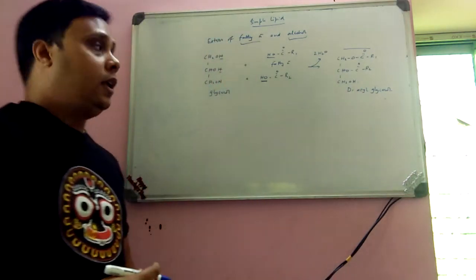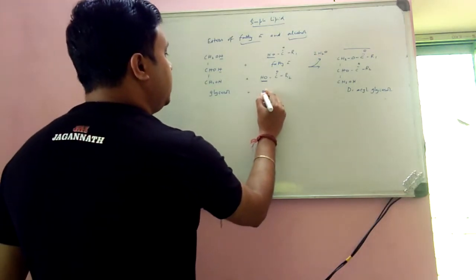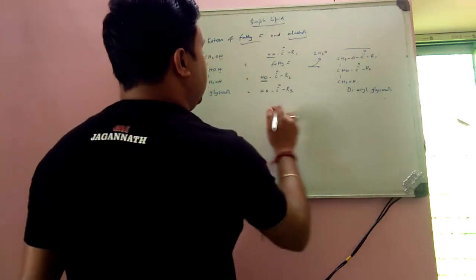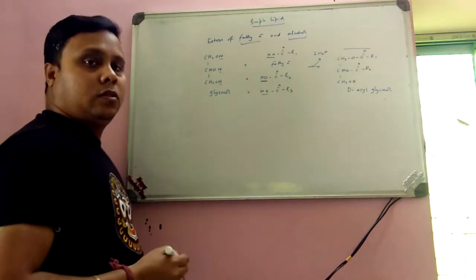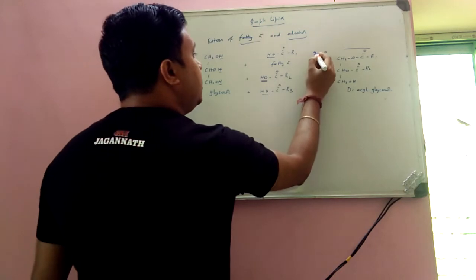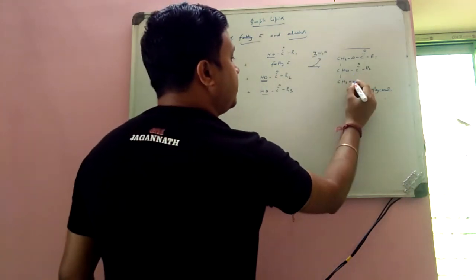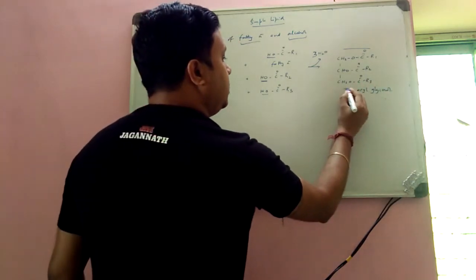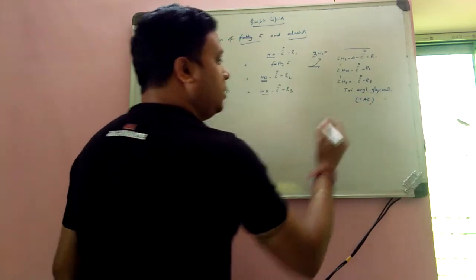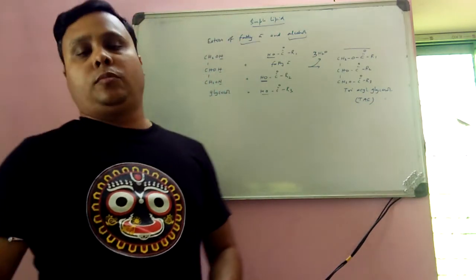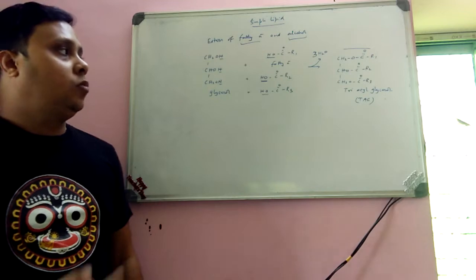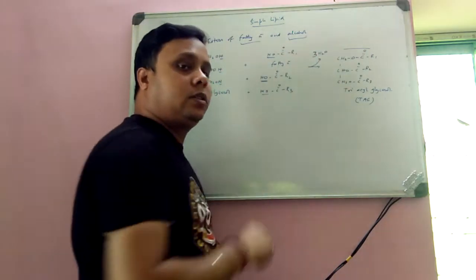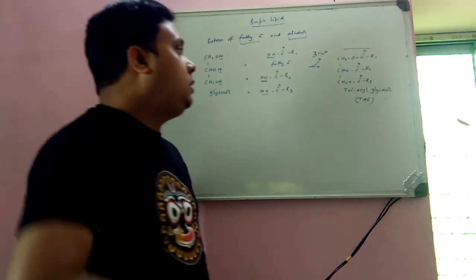If you add the third molecule of fatty acid, the same phenomenon occurs — one molecule of water will be eliminated — ultimately forming triacylglycerol, or simply called TAG. TAG is basically composed of three molecules of fatty acid and one molecule of glycerol, and the three fatty acid molecules are joined to the glycerol by ester linkages.